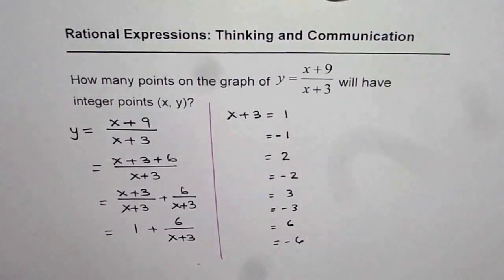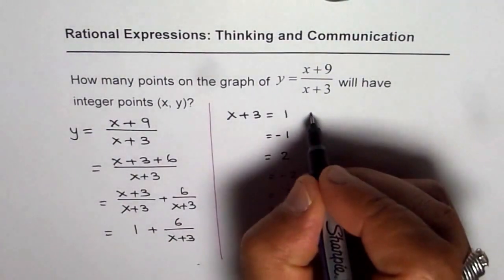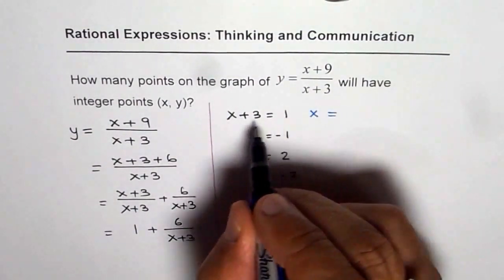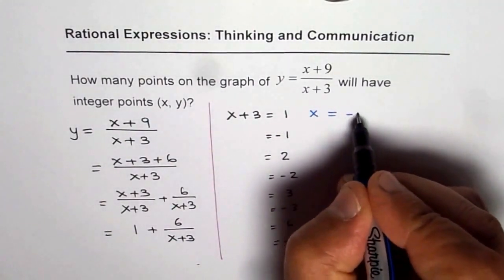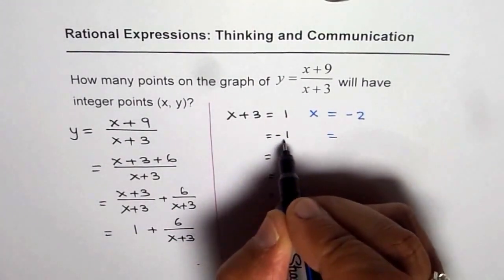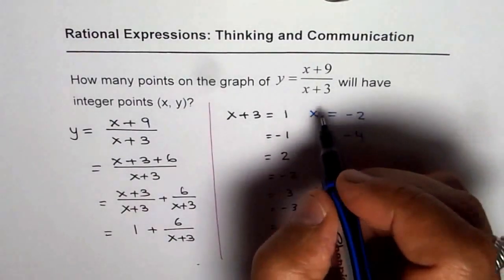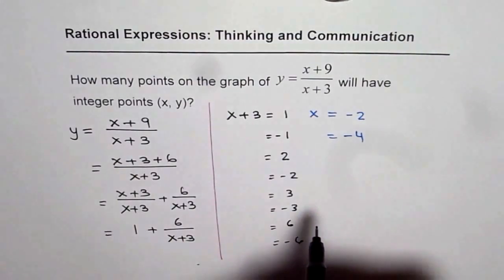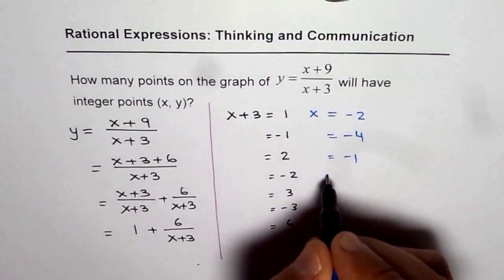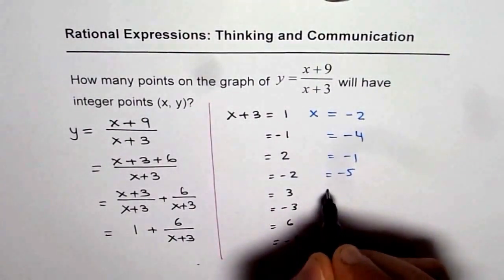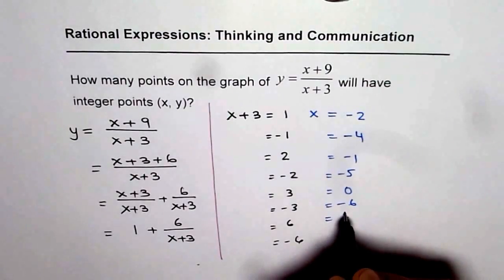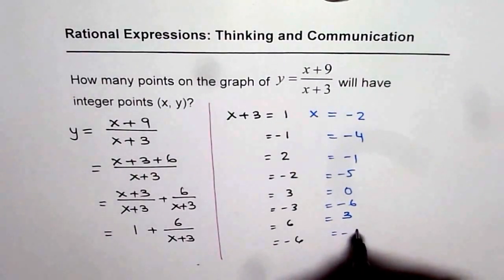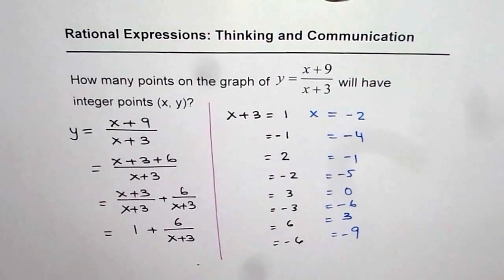Let me write down the possible values of x. If x plus 3 is 1, then the possible values for x will be 1. Take away 3 from these values. So 1 minus 3 is minus 2. For this, it is minus 4. So we are doing minus 3 to get the value of x. Minus 3 will give me minus 1, minus 3 will give me minus 5, minus 3 gives me 0 here, minus 6 there, minus 3 will give me the value of 3, and in this case, minus 9. So these are the possible x values for which y values will be integers.